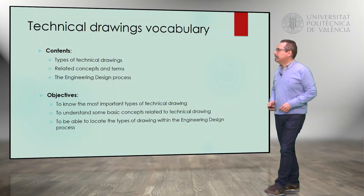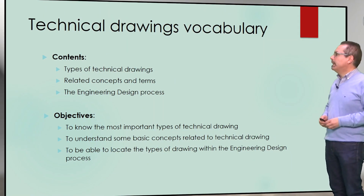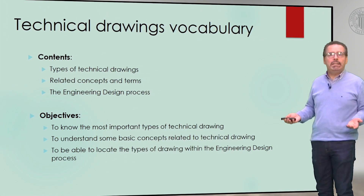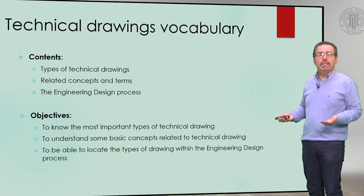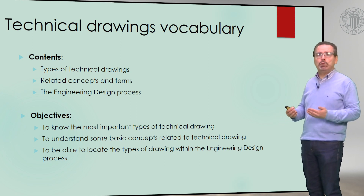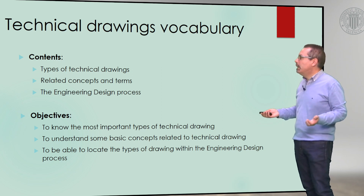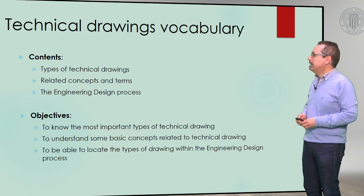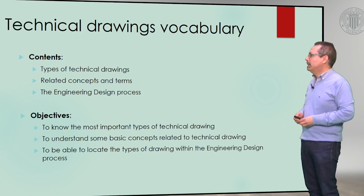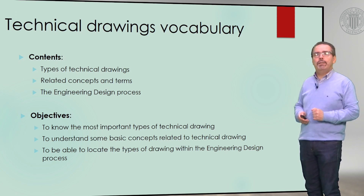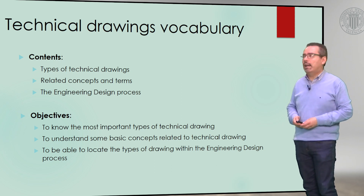These are the contents of the presentation. We will have a look at the most important types of technical drawings in English, some related concepts and items, and also we'll have a look at the engineering design process as a way of contextualizing the different types of technical drawings. The objectives are to know the most important types of technical drawings, to understand some basic concepts related to these drawings, and to be able to locate these different drawings within the context of a project or the engineering design process.